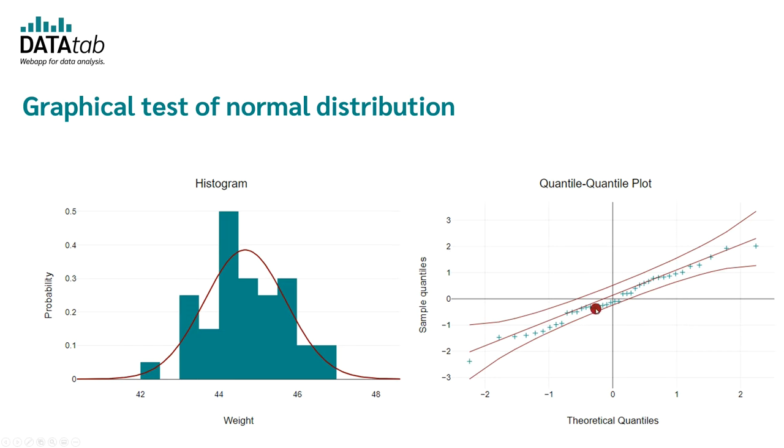If the data is perfectly normally distributed, all points would lie on the line. The more the data deviates from the line, the less it is normally distributed.